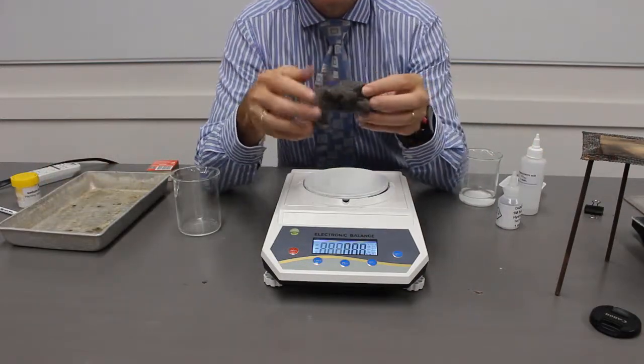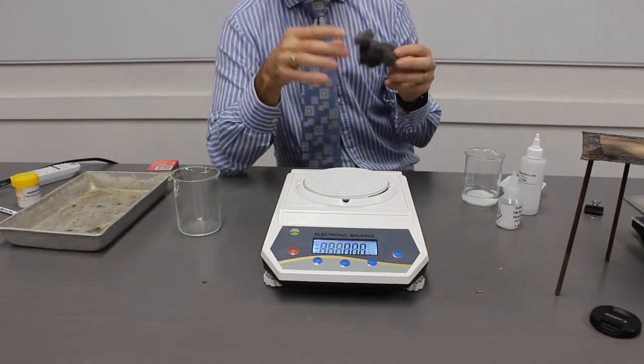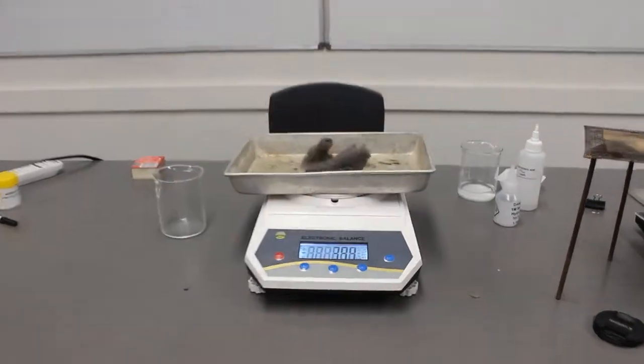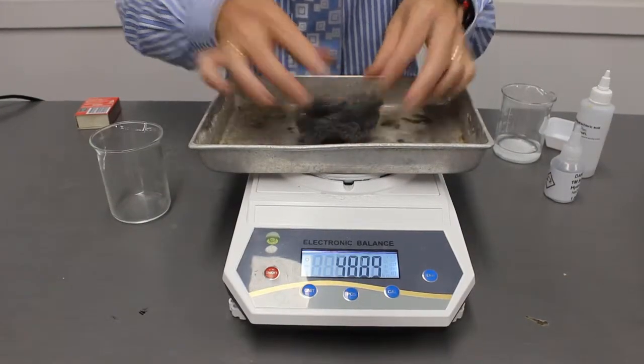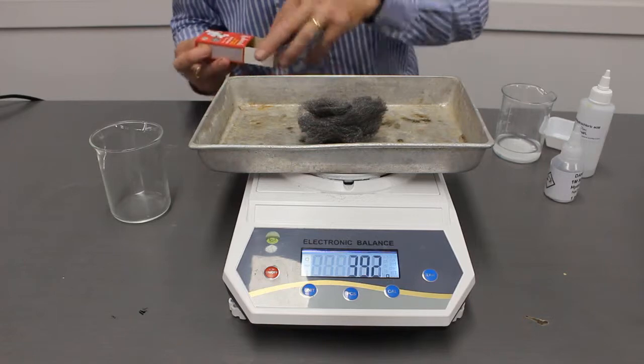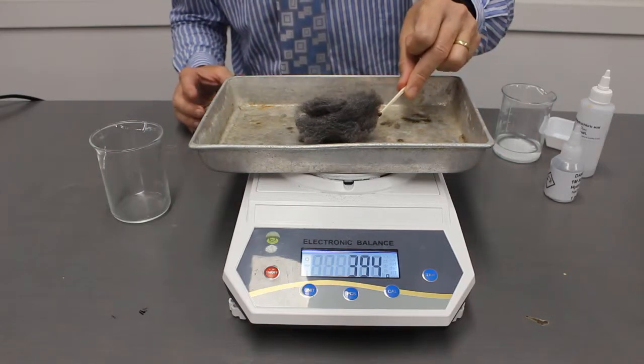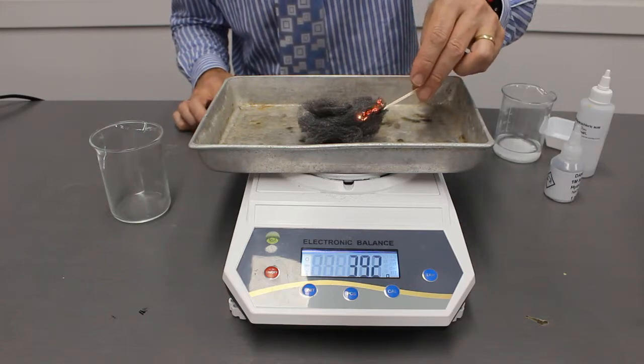This time we're going to use iron wool. We're going to get the mass of it to start off with. But first of all, I'm going to put it on this tray. And let's see what that mass is. 3.95 grams. What we're going to do is actually burn this iron wool. We're going to burn it because we're going to produce iron oxide.